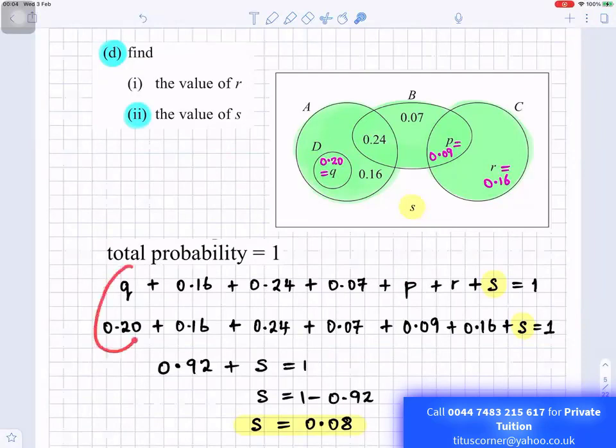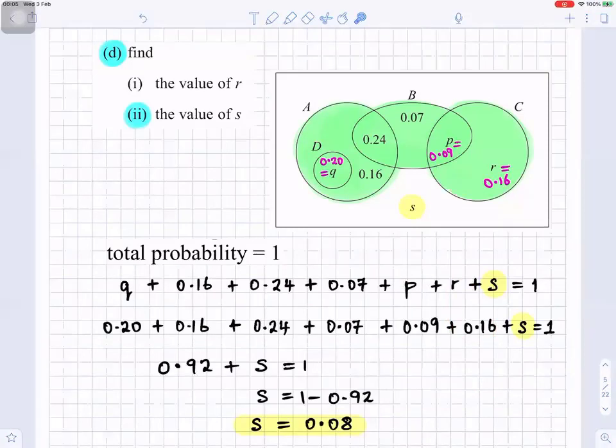Q is 0.20. P is 0.09. R is 0.16. We substitute in those values. And when we add all these numbers, you get 0.92. So 0.92 plus S is equals to 1. So S is equals to 1 minus 0.92, which gives you S equals to 0.08.